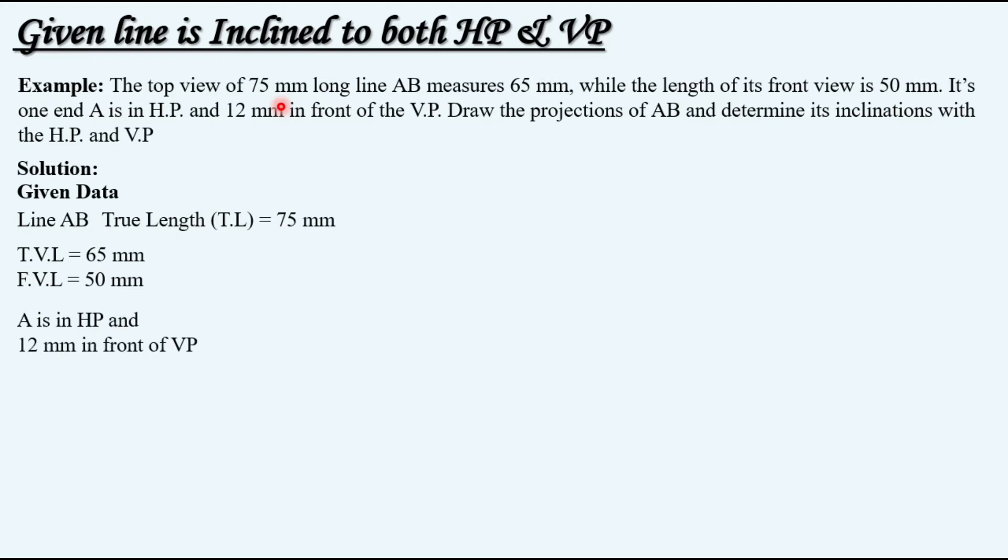Also the endpoint A, both front view and top view locations are given in the question. A is in HP and 12 mm in front of VP. What is required to be found? So theta that is inclination with HP and phi inclination with VP are required to be found.